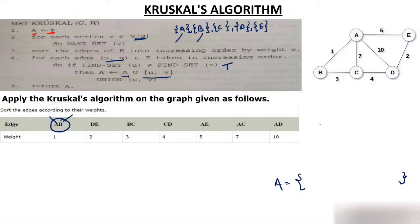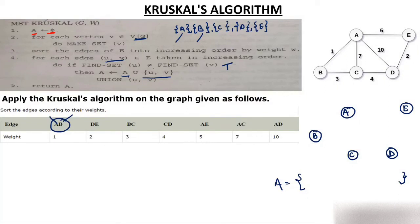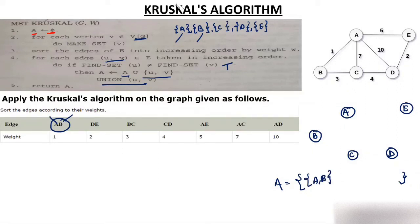A is in a different set, B is in a different set, so the condition becomes true. When the condition is true, you add edge UV to set A. Then you do Union(A, B), so A and B come together. I will make the vertex and remove them from the individual Make-Set entries since they are now united.